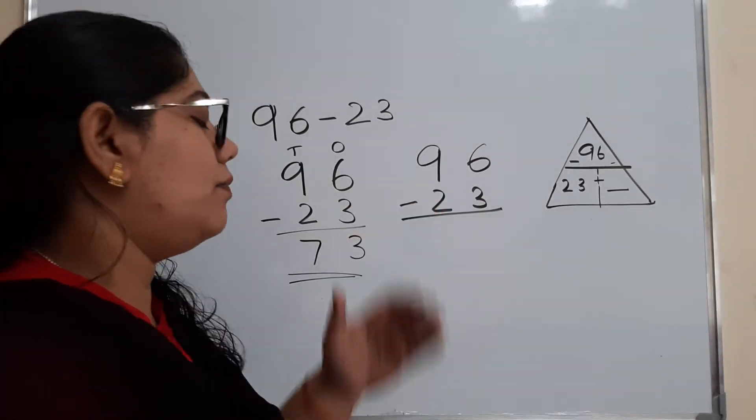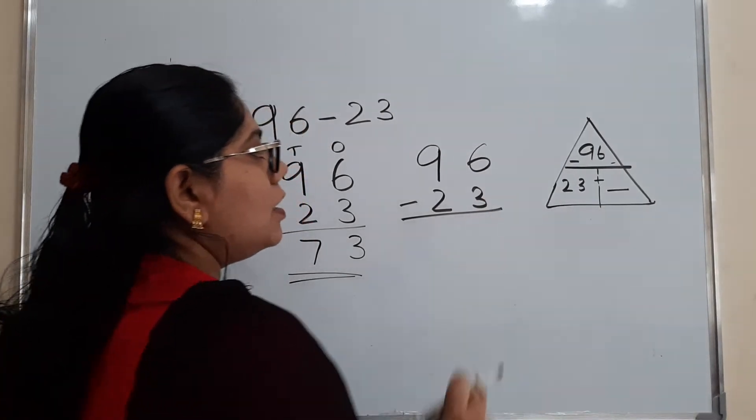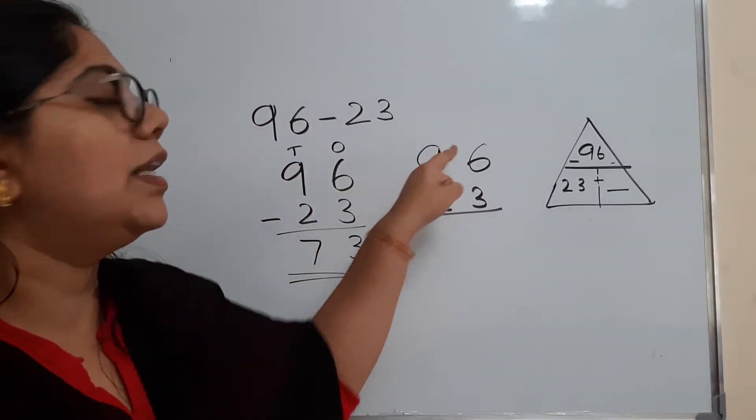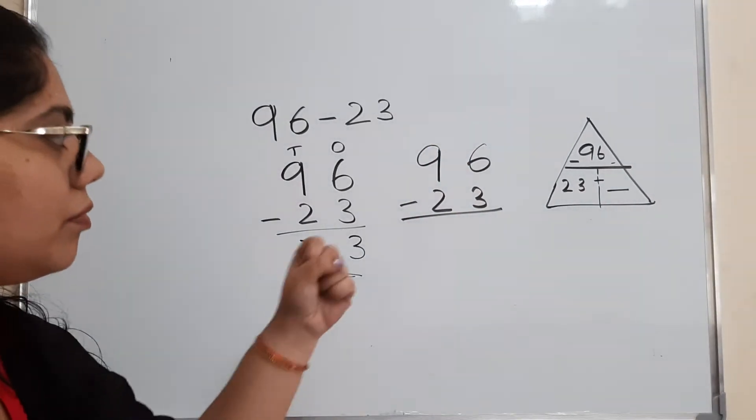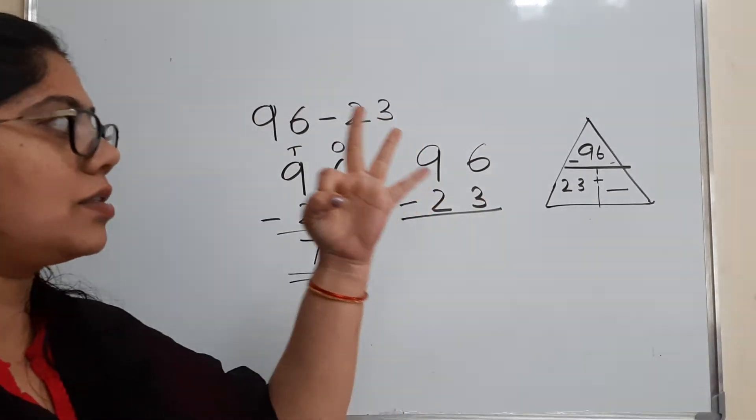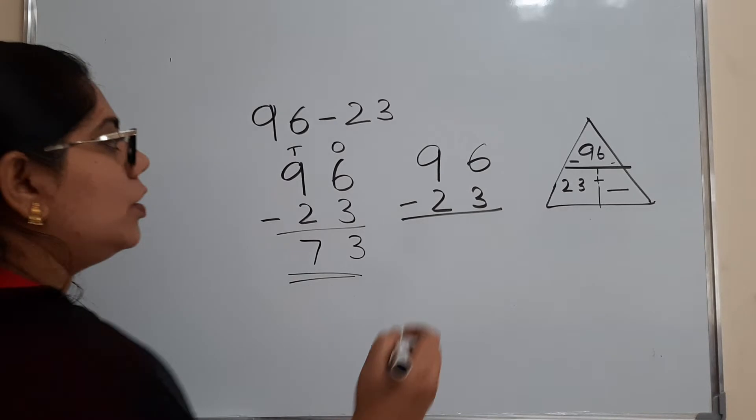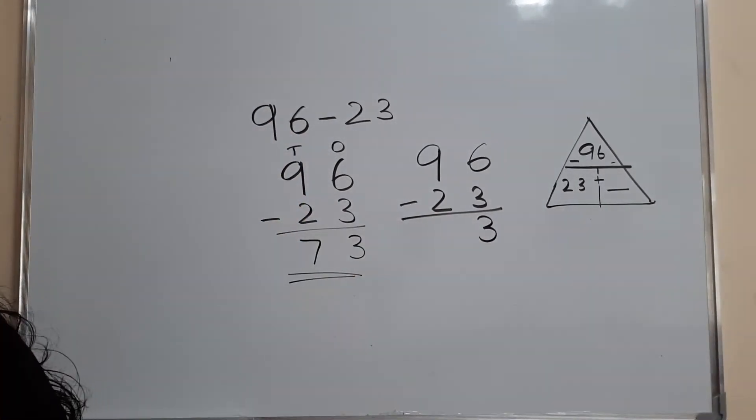Now, how I will explain. So 3, with the 3, if something is added, you will get 6. What will you add with 3 to get 6? So after 3, 4, 5, 6. So if you add 3, you will get 6. So 3 comes here.